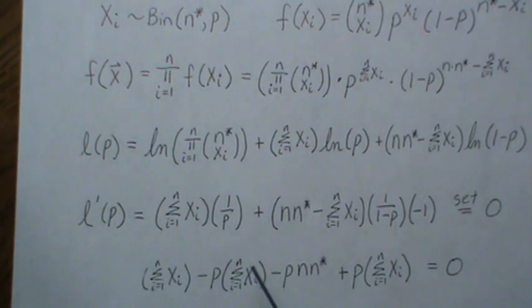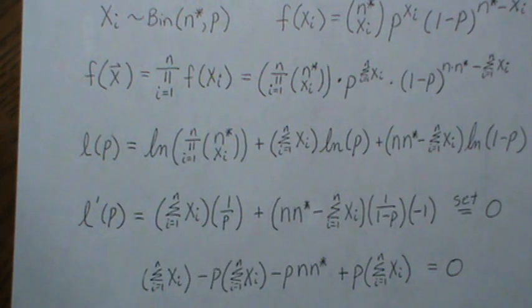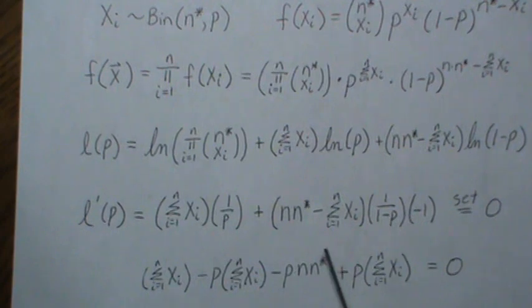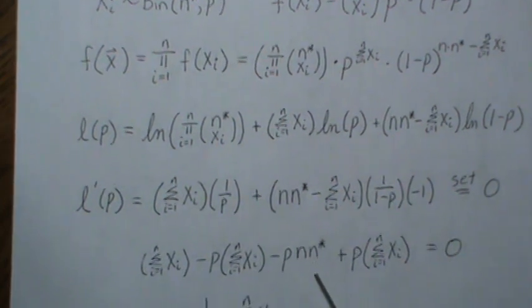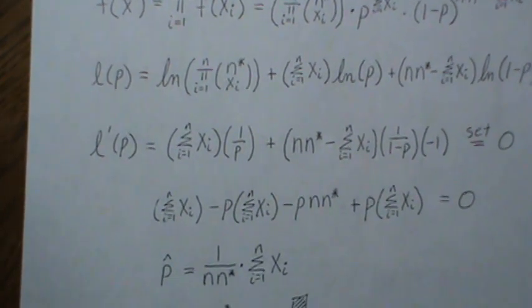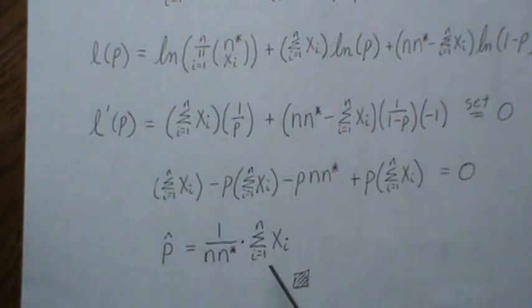And now we solve. I want to again get rid of the denominator, so I multiply everything by p times 1 minus p. And then I multiply through—that's what I get there. And here p is left over, so I multiply it times each of those. This cancels with that. Subtract that to the other side, divide by n times n star, and this is the maximum likelihood estimator of a sample of size n from a binomial distribution.